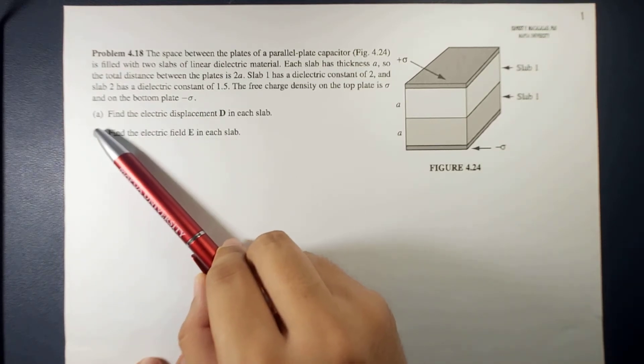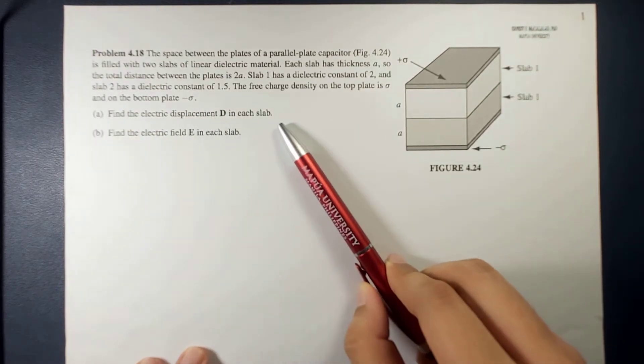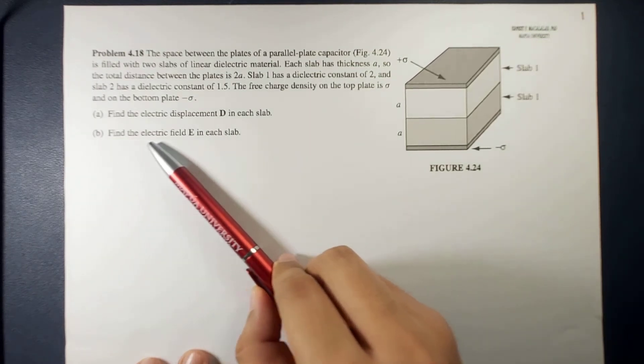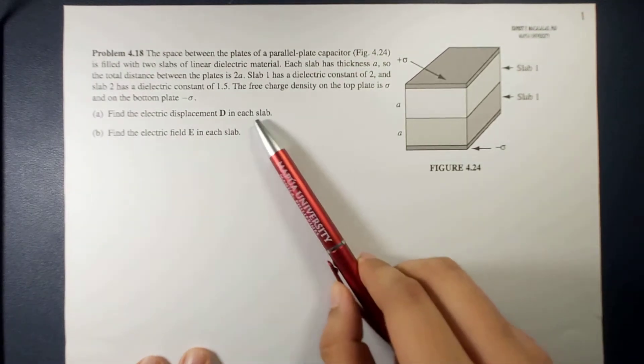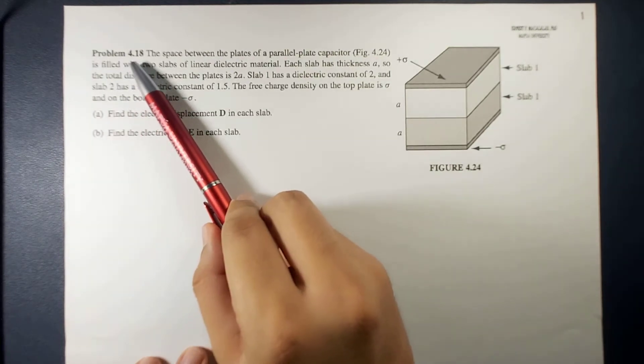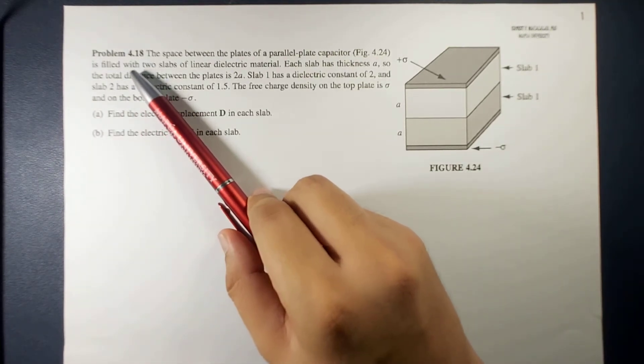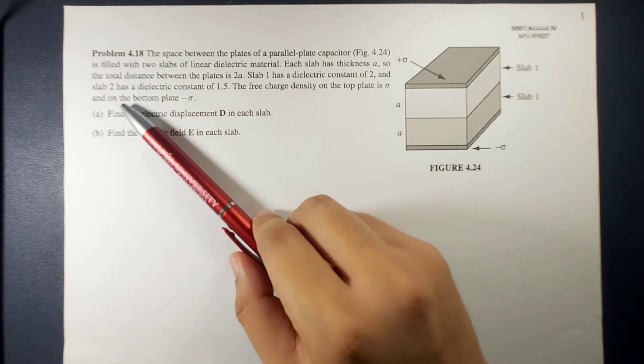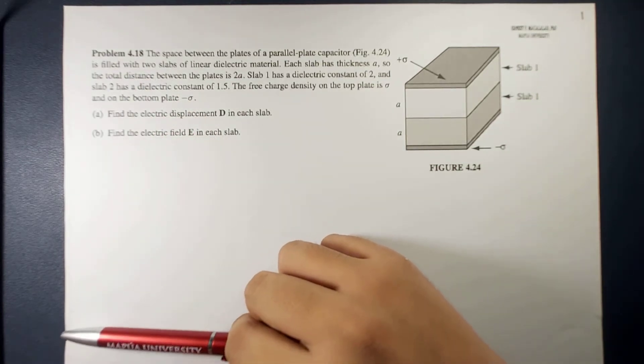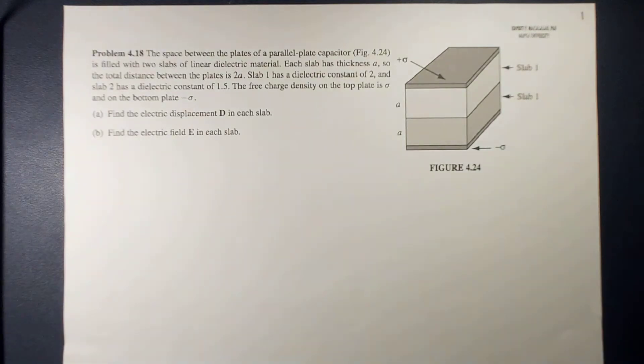Letter A, find the electric displacement D on each slab, and letter B, find the electric field in each slab. So this is just the first part of problem 4.18. In the next video, we're going to find the polarization in each slab and find the potential difference between the plates.